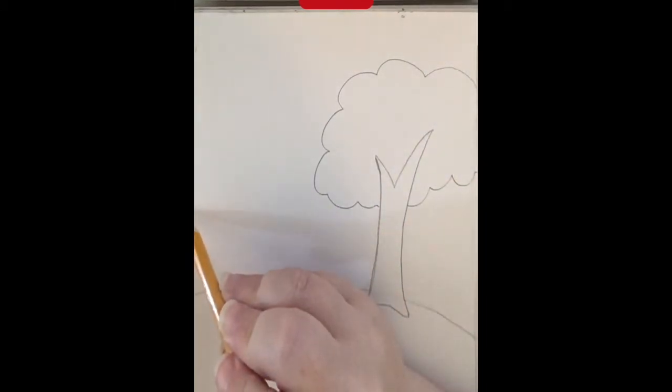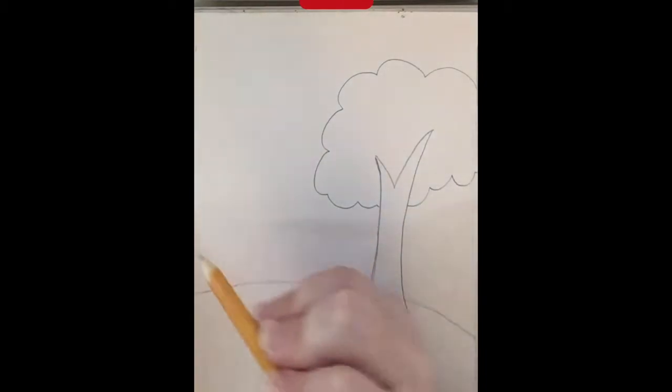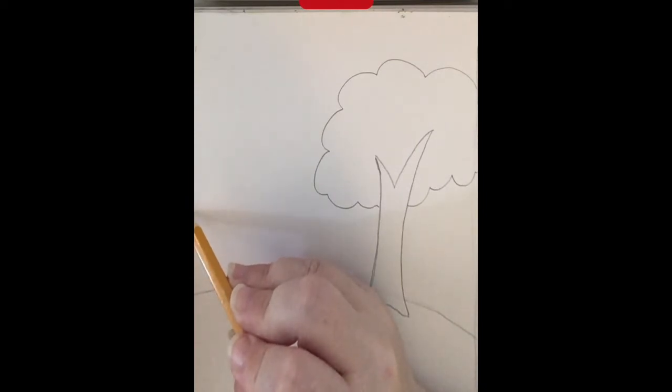And then what we're going to do is over here on the left side, we want to equal the balance a little bit without making this picture completely symmetrical. We're going to make it asymmetrical but still balanced.